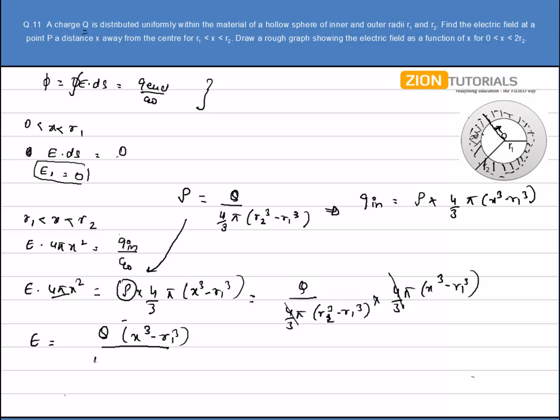So E comes out to be Q(x³ - R1³) divided by 4πx²(R2³ - R1³). That is my answer for the electric field when the distance is between R1 and R2.